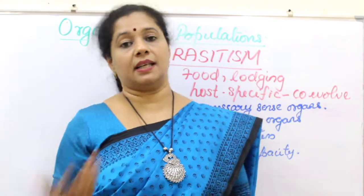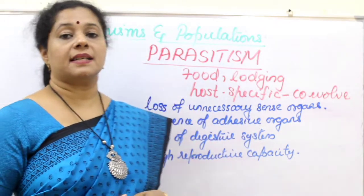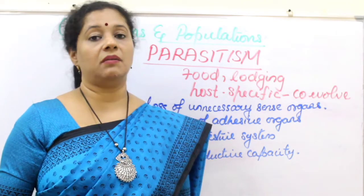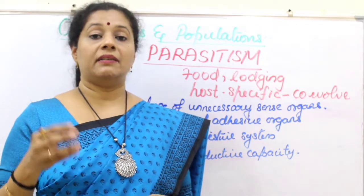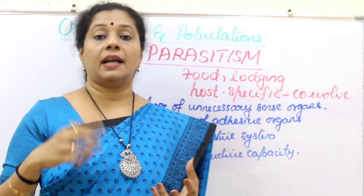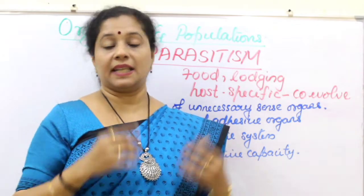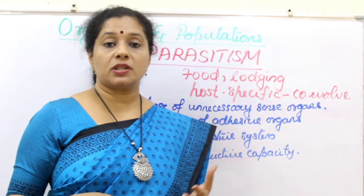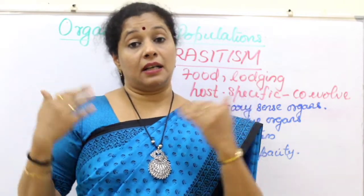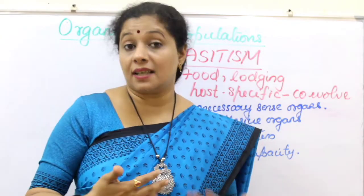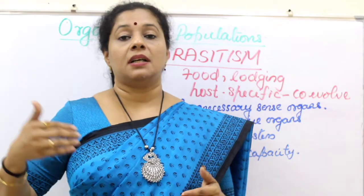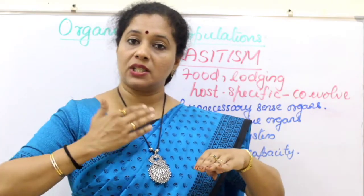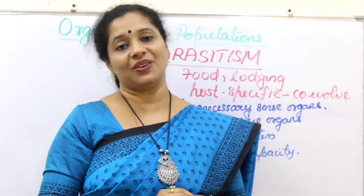If parasites kill the host, their own life would be in danger too. Most parasites are host-specific — they can live on only certain particular hosts, not any random host. For example, the malaria parasite Plasmodium lives in our liver cells and red blood cells, and its other host is the mosquito — very specific. During evolution, the host tries to get rid of the parasite, so the host undergoes certain changes to eliminate them. At the same time, parasites co-evolve — whatever changes the host makes, the parasite undergoes changes to overcome them and remain.